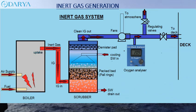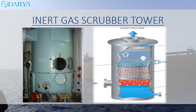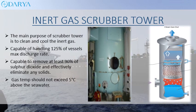The main purpose of the scrubber tower is to clean and cool the inert gas. It is capable of handling 125% of the vessel's maximum discharge rate, removing at least 90% of sulfur dioxide, and effectively eliminating any solids. Gas temperature should not exceed 5 degrees Celsius above the sea water temperature.